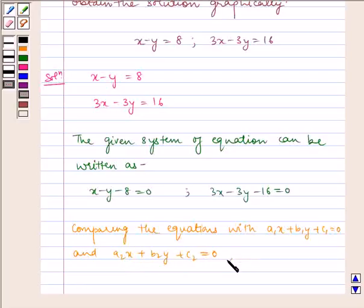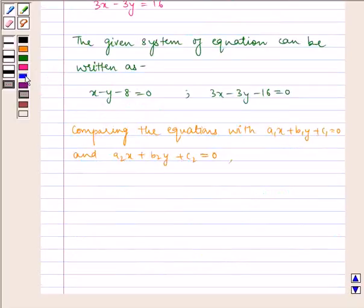We get a1 equals 1, b1 equals minus 1, c1 equals minus 8, and a2 equals 3, b2 equals minus 3, and c2 equals minus 16.